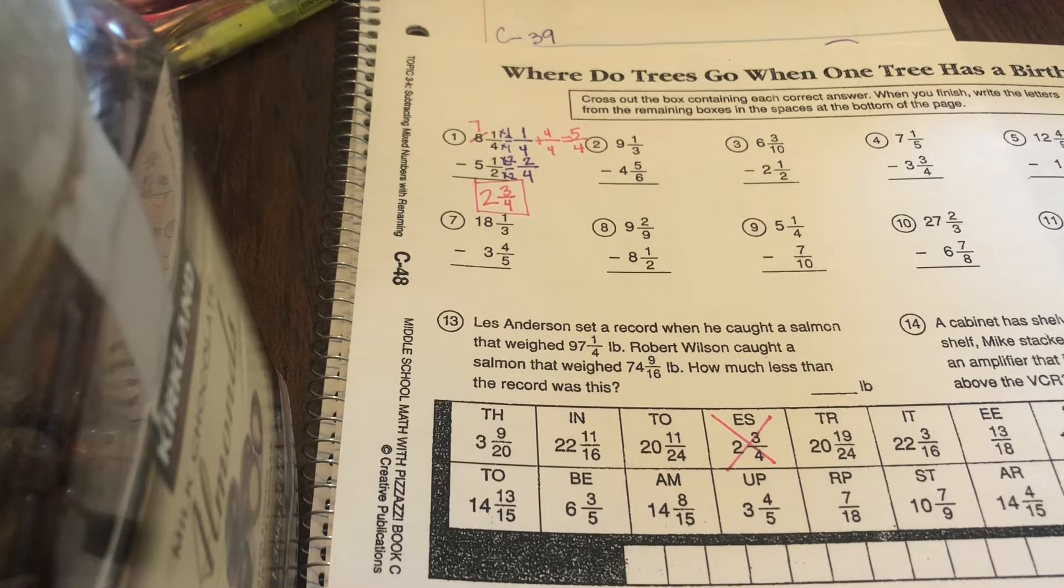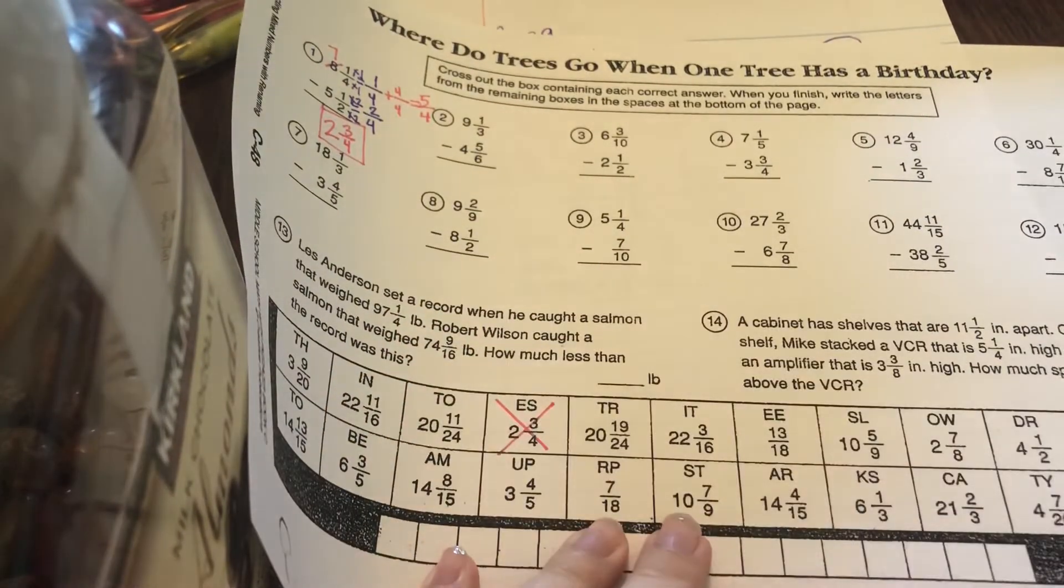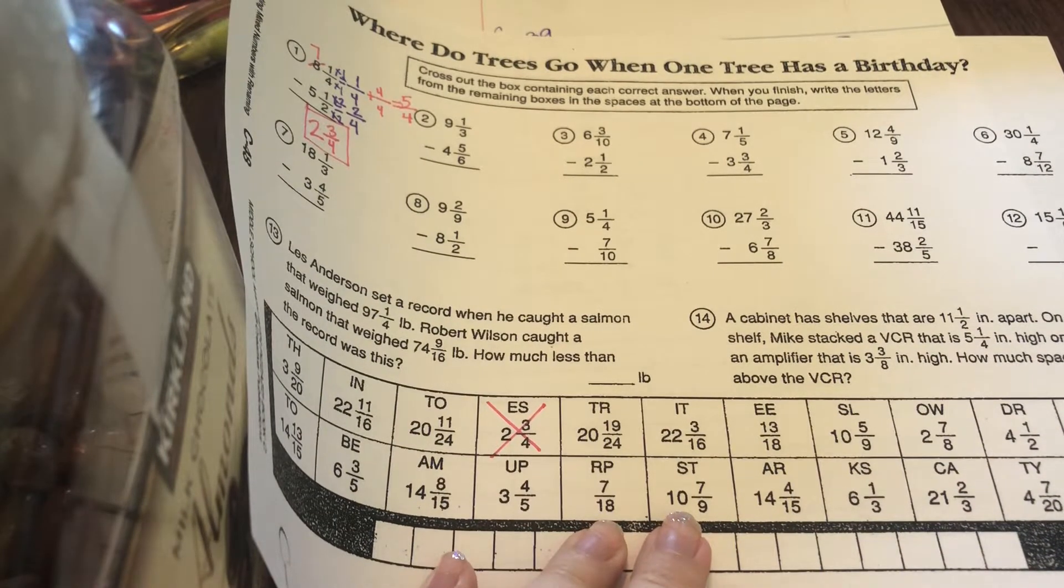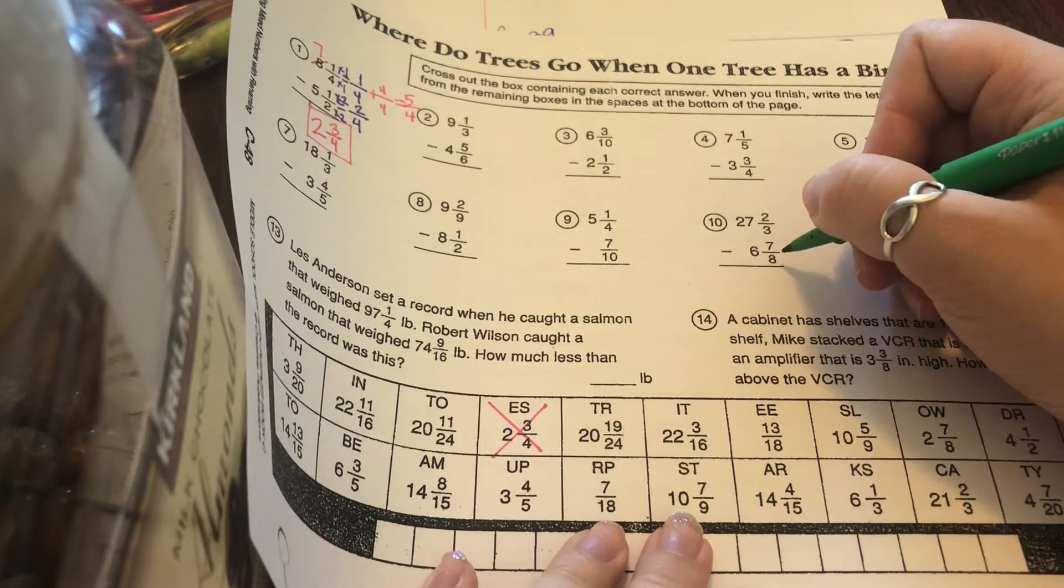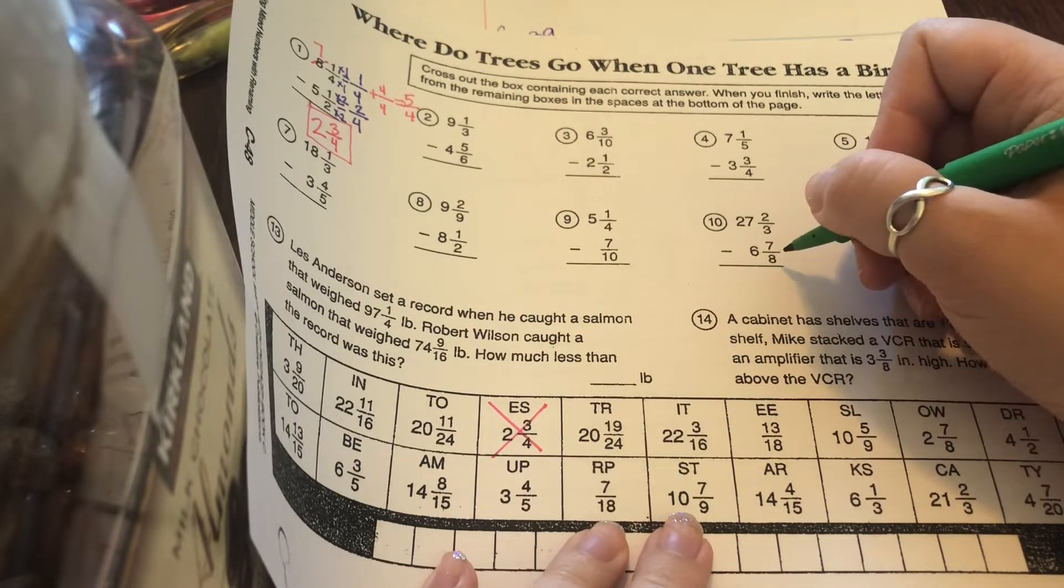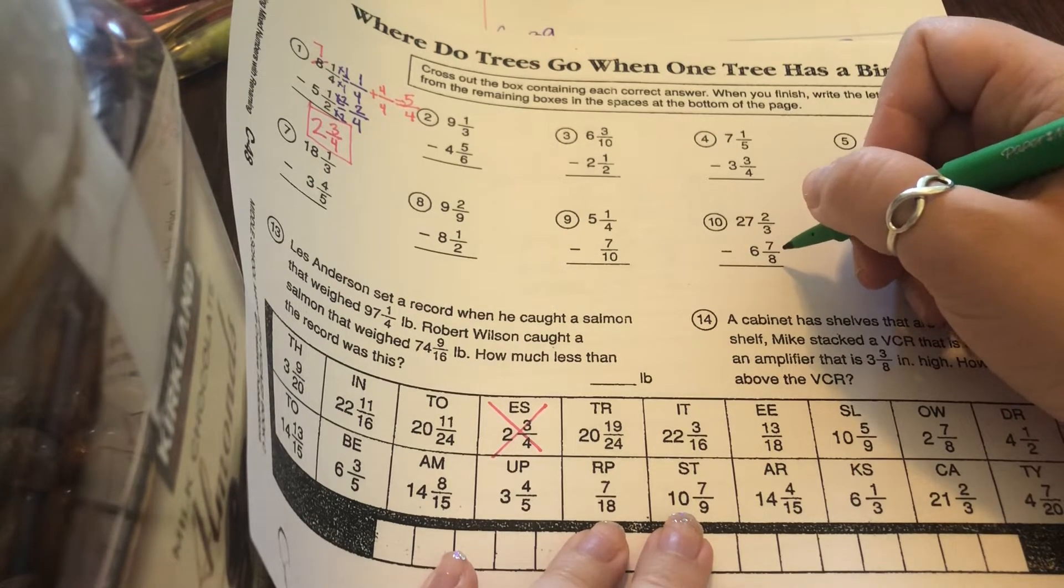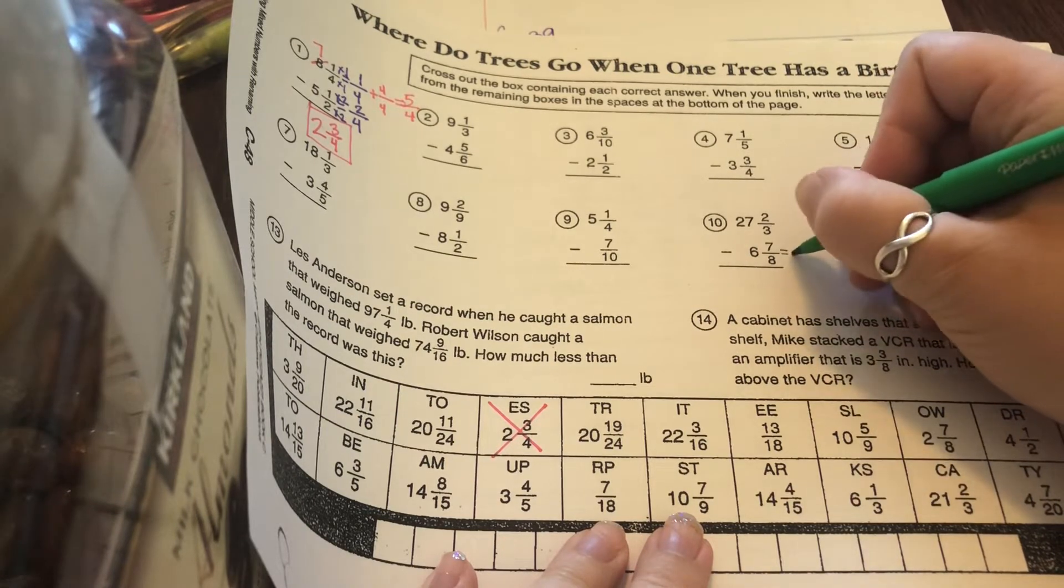Let's look ahead and try to figure out number 10. For number 10, I want to figure out what's my common denominator of 3 and 8. Can 3 become 8? No. 8 times 2 is 16. Can 3 become 16? No. 8 times 3 is 24. Can 3 become 24? Yes, it can.